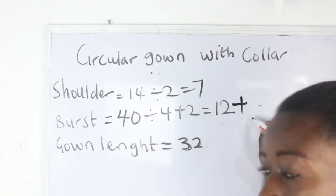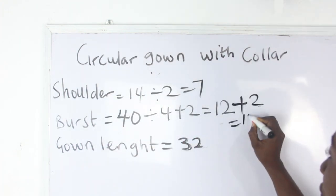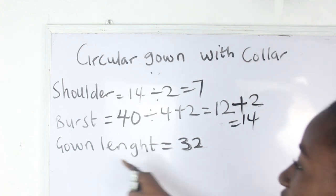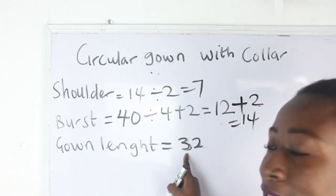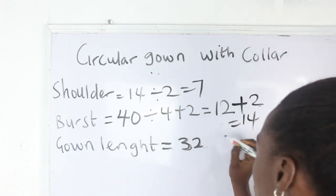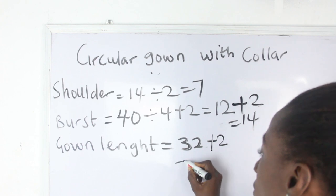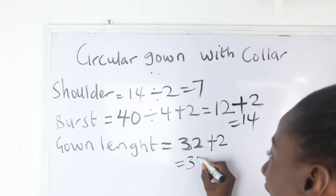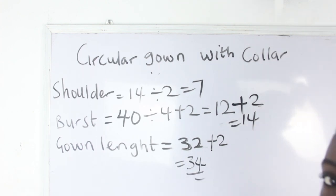So I've gone ahead now and added 12 plus 2, giving me 14 inches. My gown length is 32, and I will go ahead and add 2 inches to my gown length to have 34 inches. So these are the basic measurements required in order for you to achieve this.